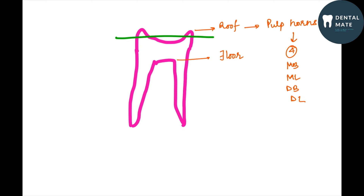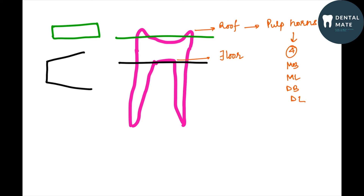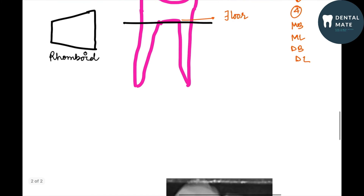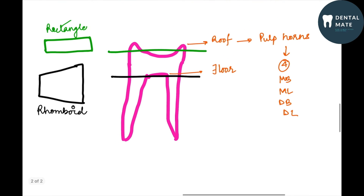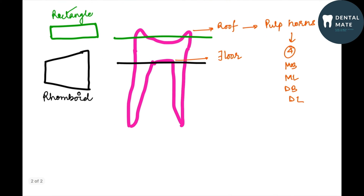If we take a cross section at the roof area of the mandibular first molar, the roof is rectangular in shape. Whereas if we take a cross section of the floor, the floor is rhomboidal in shape. So the canal orifices present at the floor or at the CEJ junction level would be located in a rhomboidal arrangement.